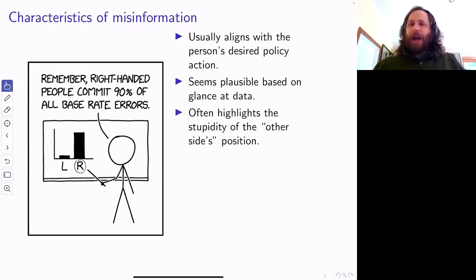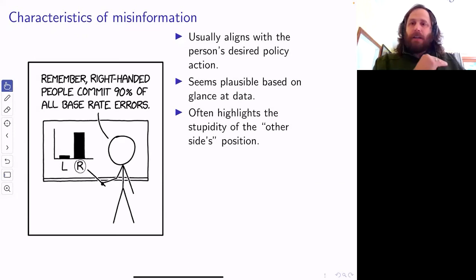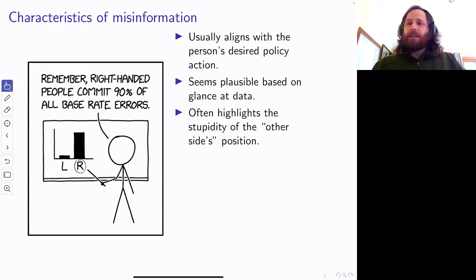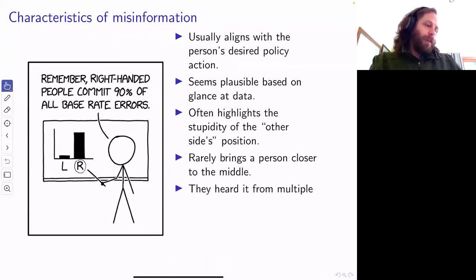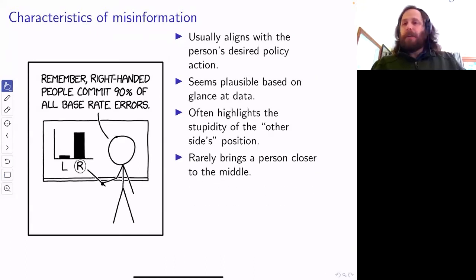If it looks plausible — even at a glance at the data — that's enough for most people. And these two things together are convincing. If it highlights how stupid the other side is, even better — then nobody could possibly believe this is not true. It rarely brings somebody closer to the middle or towards a consensus. It usually is something that's polarizing. And finally, something that really helps is when you start to hear it from multiple sources.